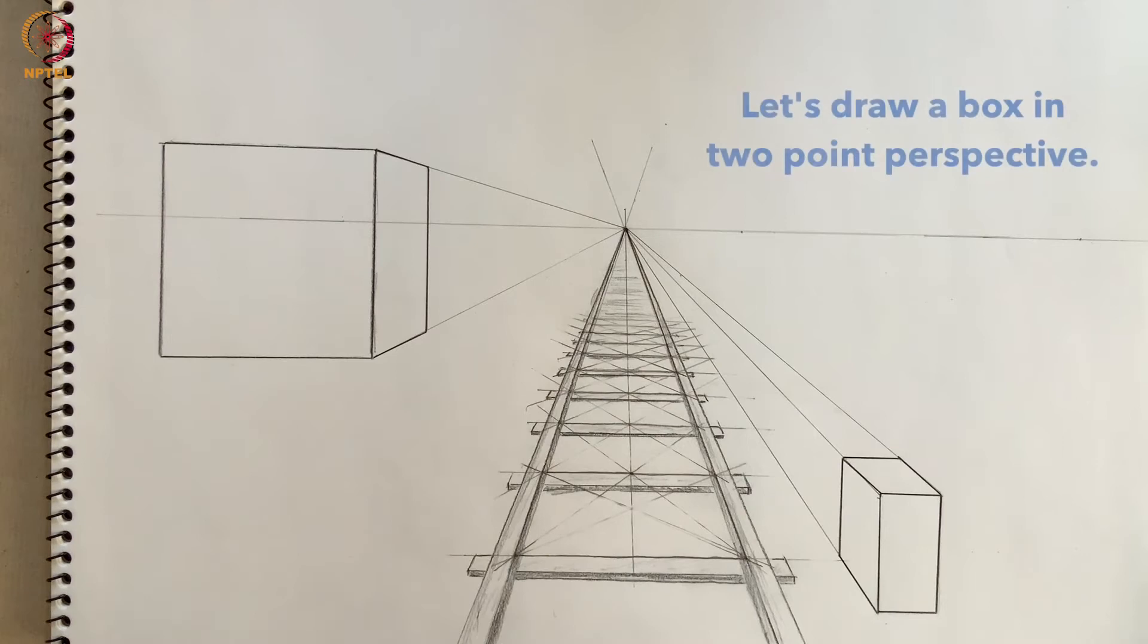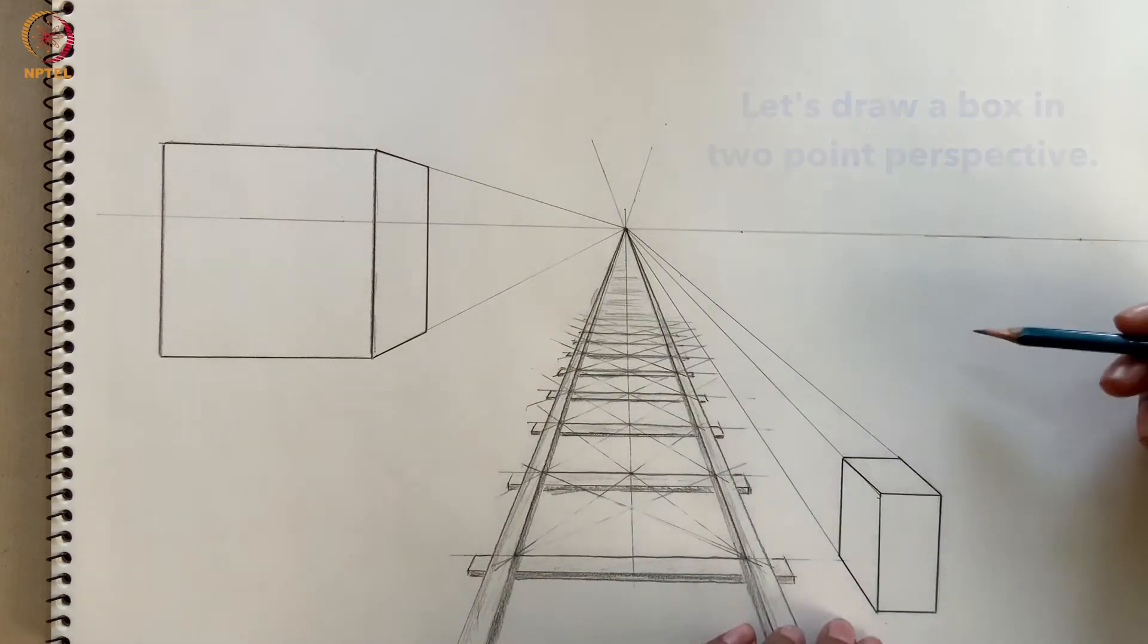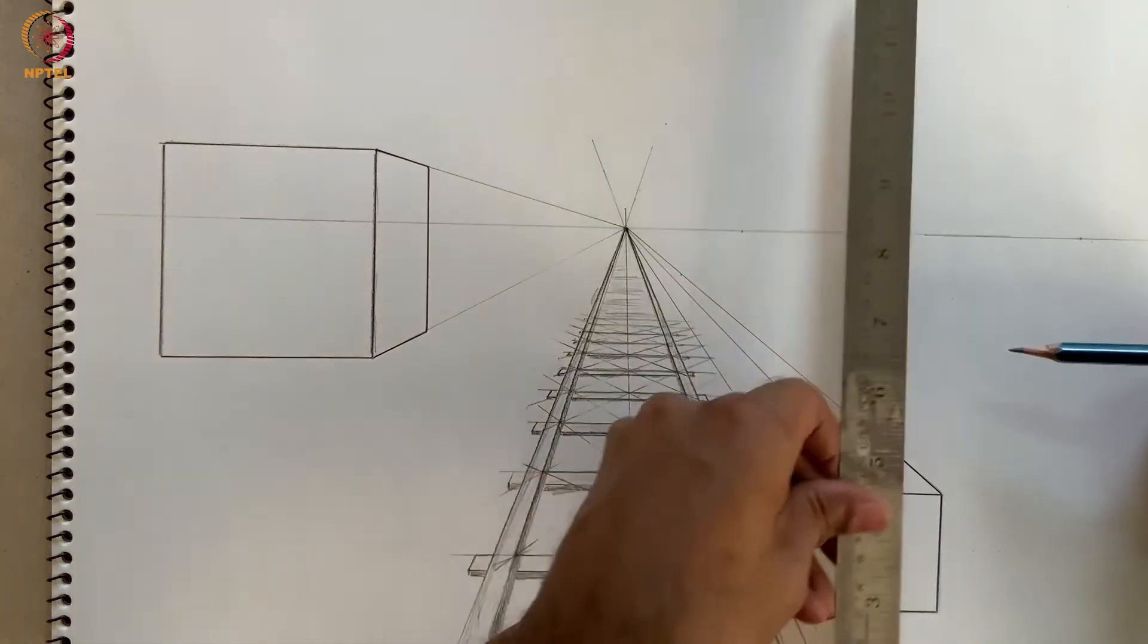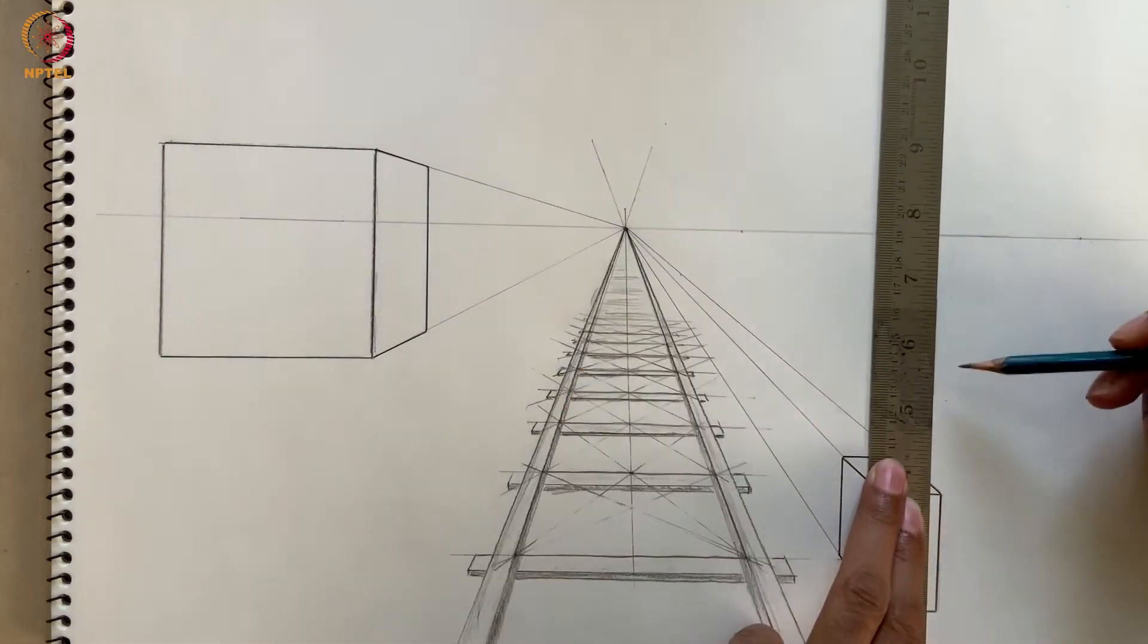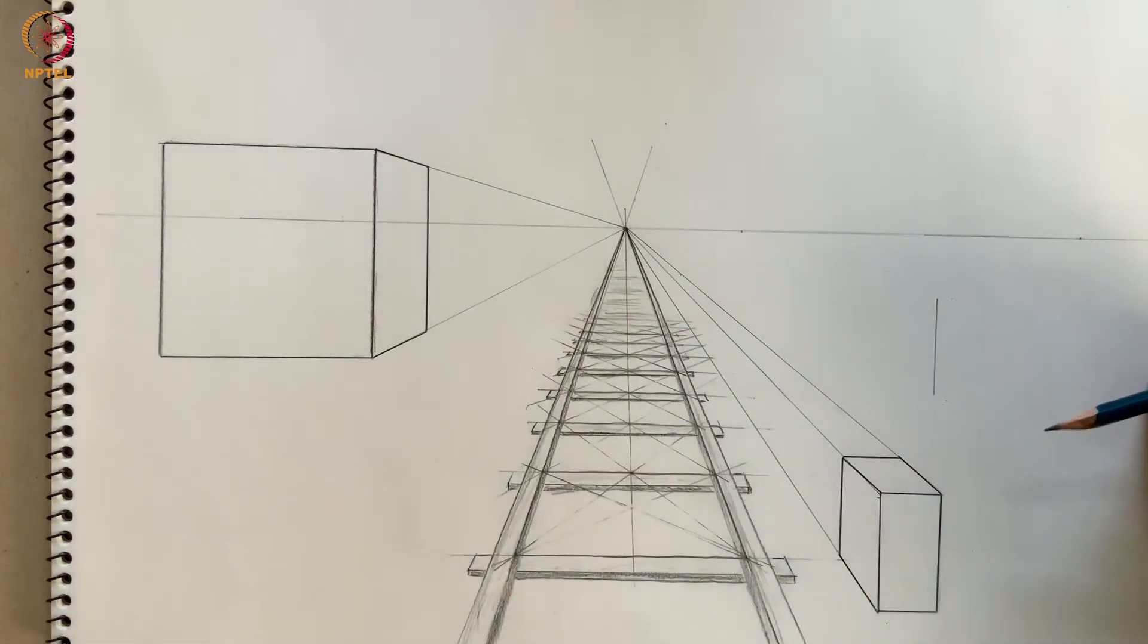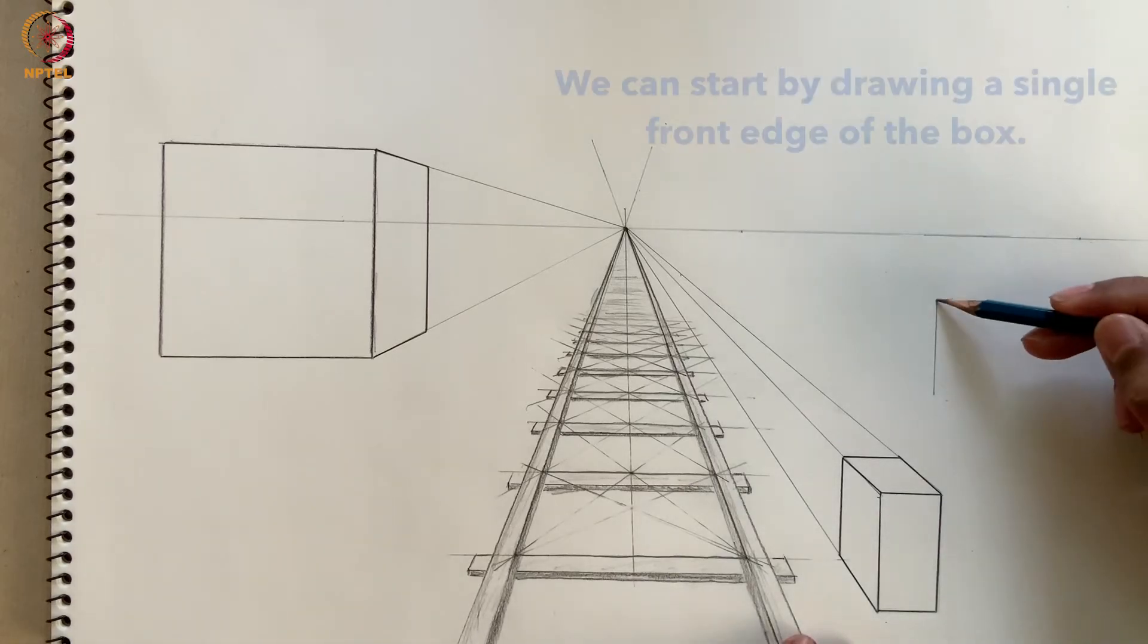Let's now draw a box that is oriented in two-point perspective. In this case, only one dimension of the box will be parallel to the picture plane, so we can start by drawing a single front edge of the box, represented by this vertical segment.